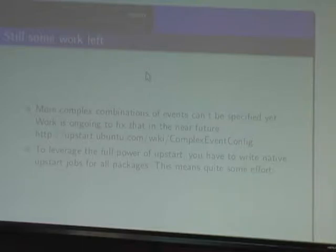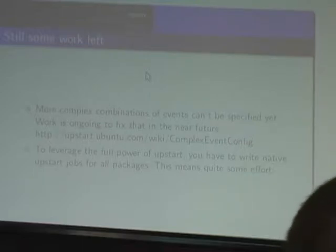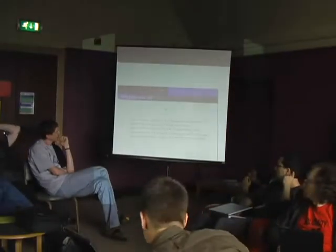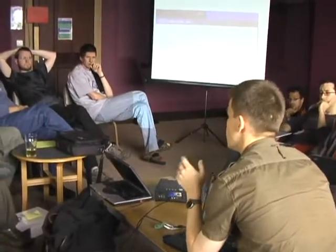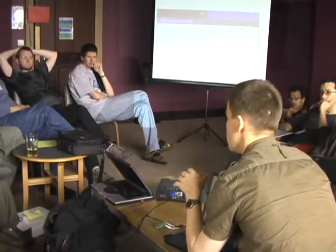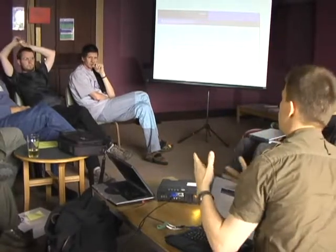The Upstart job file format is declarative — you just state the path to your daemon and the parameters. You say whether you want it respawned or not. Then you have sections called pre-start and post-stop where you can prepare the environment for the daemon to be started. For example, a typical use case would be to create a run directory, initialize something, or load a module.